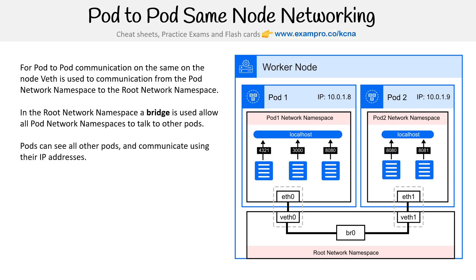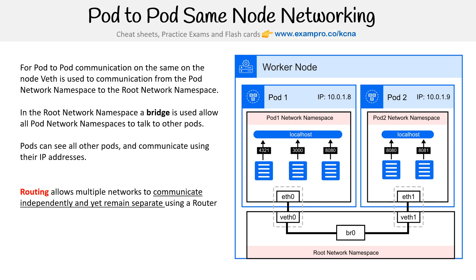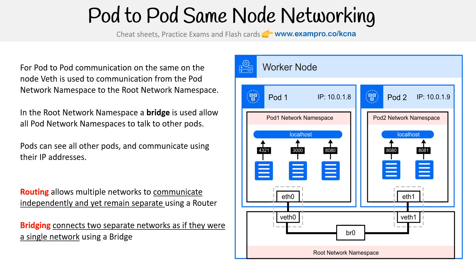I want to distinguish between routing and bridging, because a lot of people might think a bridge is just a router, but they're not. Routing allows multiple networks to communicate independently while remaining separate, using a router. Bridging connects two separate networks as if they were a single network using a bridge. A bridge is simpler and treats everything on the same network — which is exactly what it does here, since they share the same address space at 10.0.0.